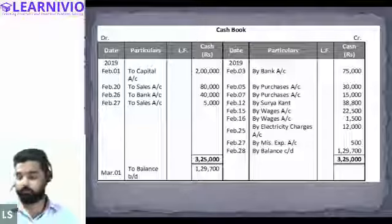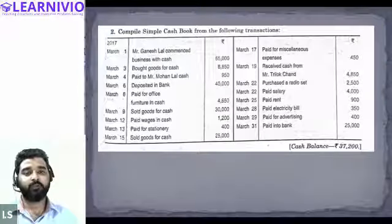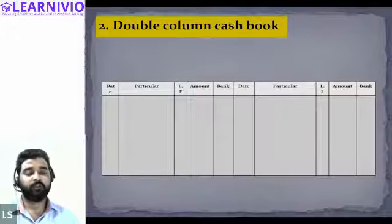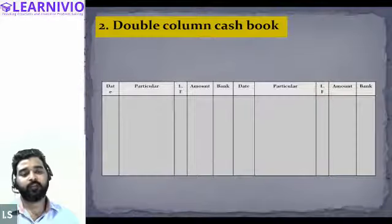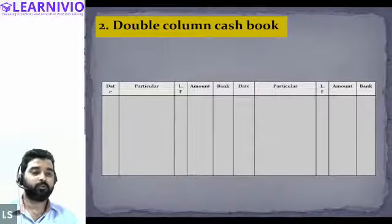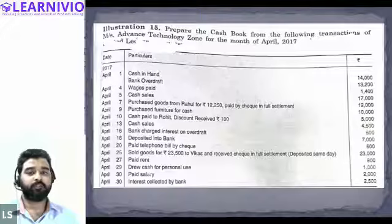Now we will do the double column cash book. In the double column cash book, the only difference is that we also record bank transactions. If a transaction is related to bank, it will be recorded in the bank column. We prepare two different columns — one for cash transactions and one for bank transactions.